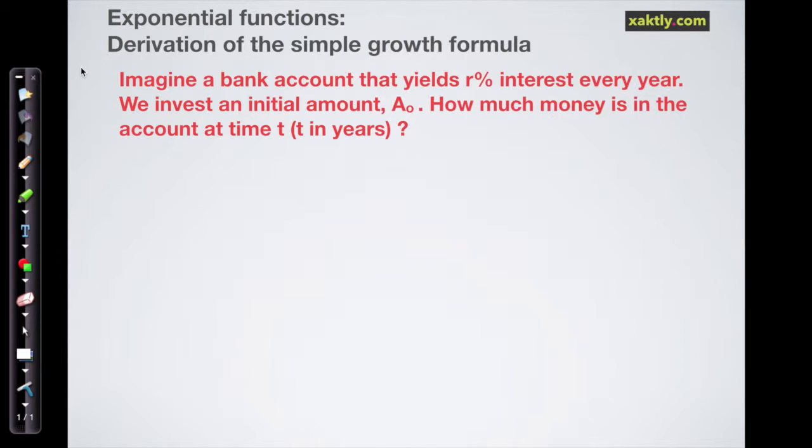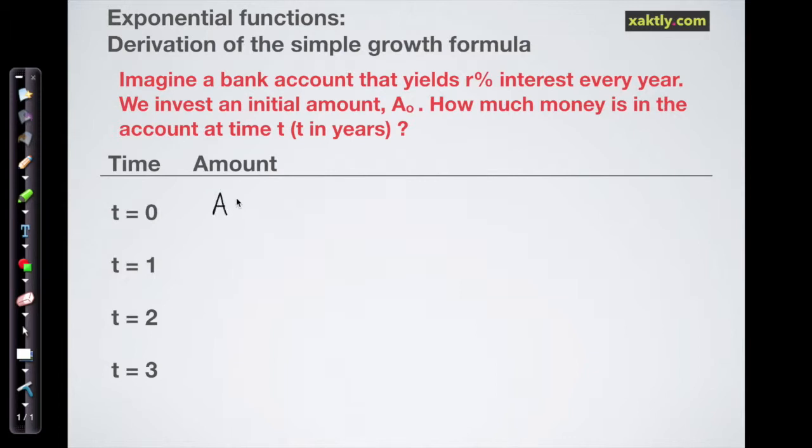We won't use any numbers, just symbols, and the initial amount we invest is called A naught, A sub zero, and we'll take a look at how much money we have in that account every year. So we'll start by making ourselves a little table to keep track of the time in years and the amount, and we'll start with an initial amount at year zero of A naught.